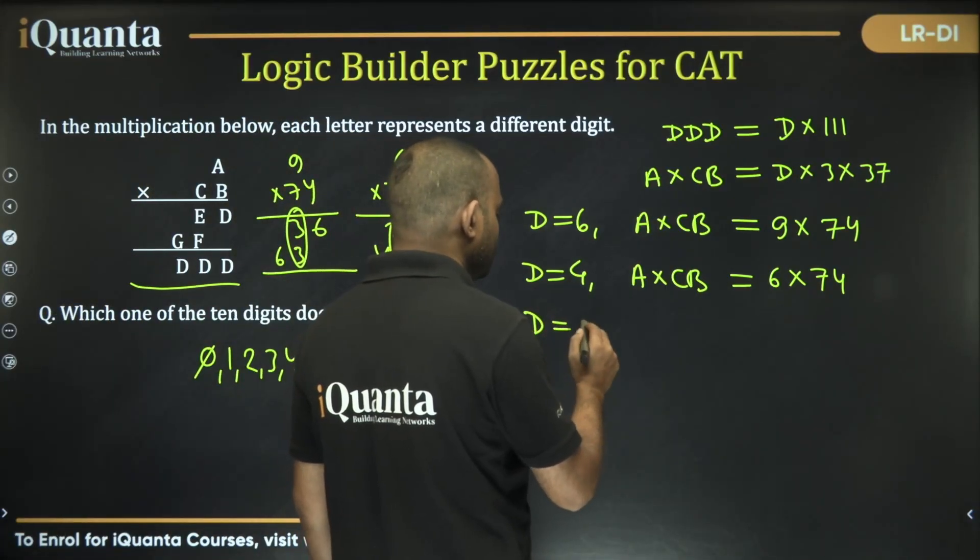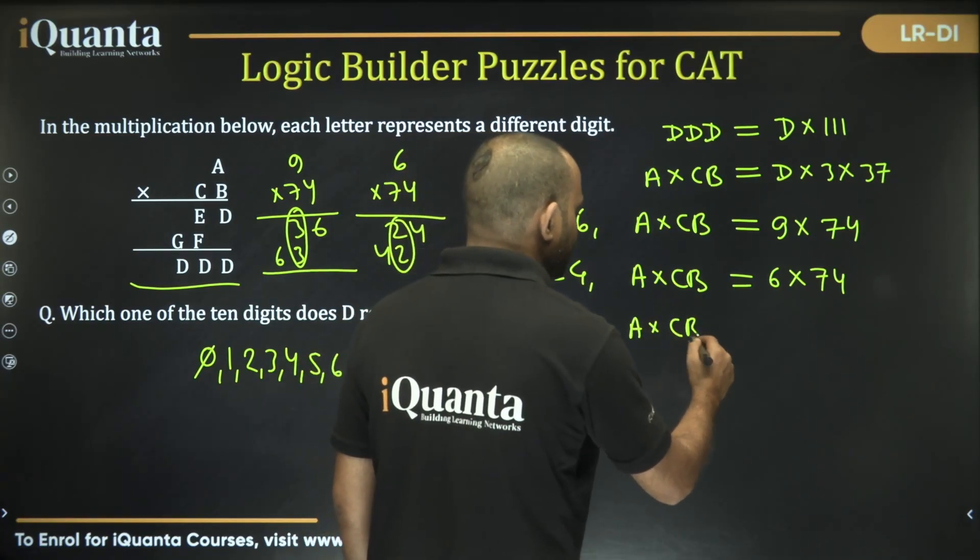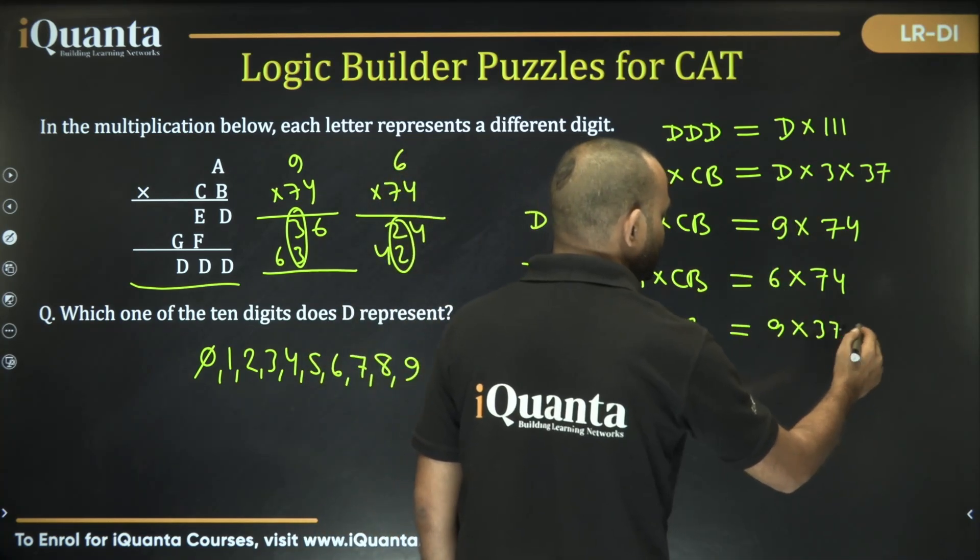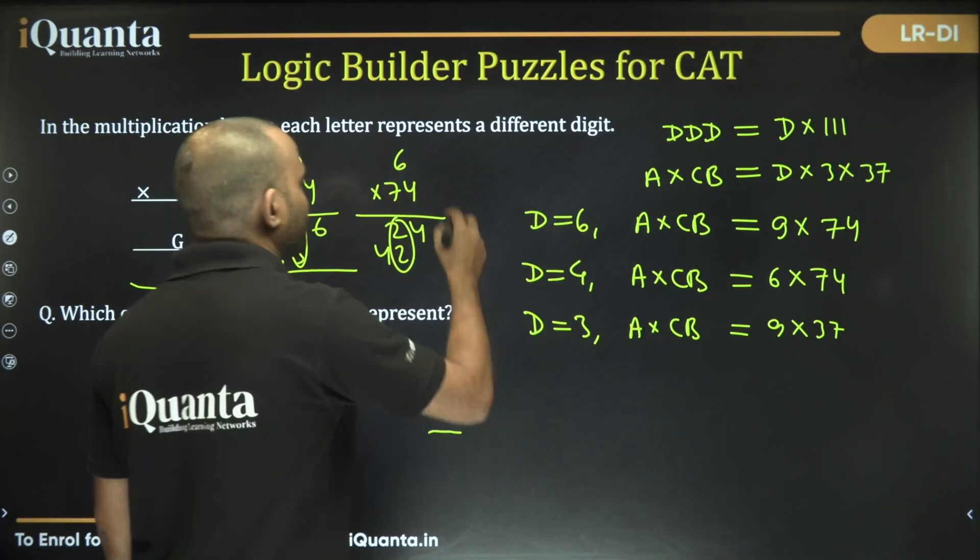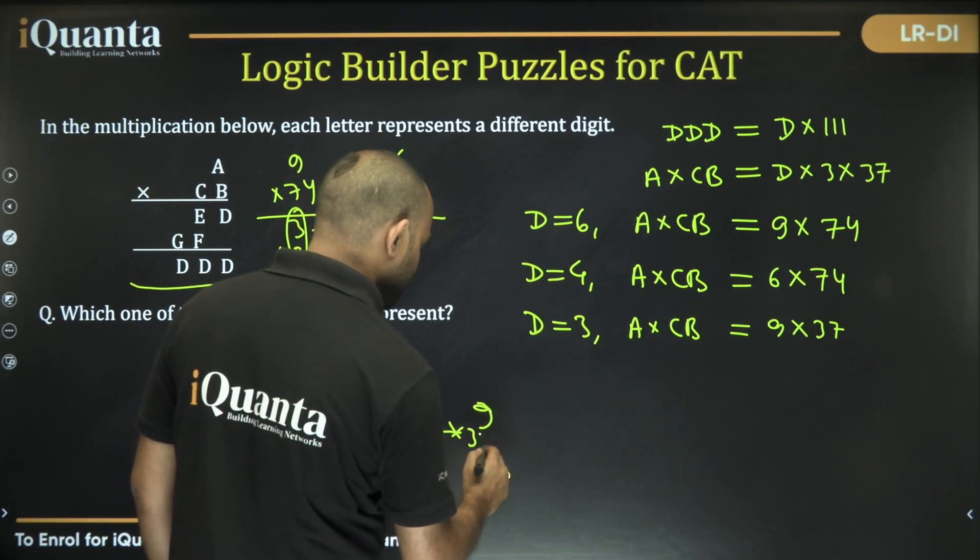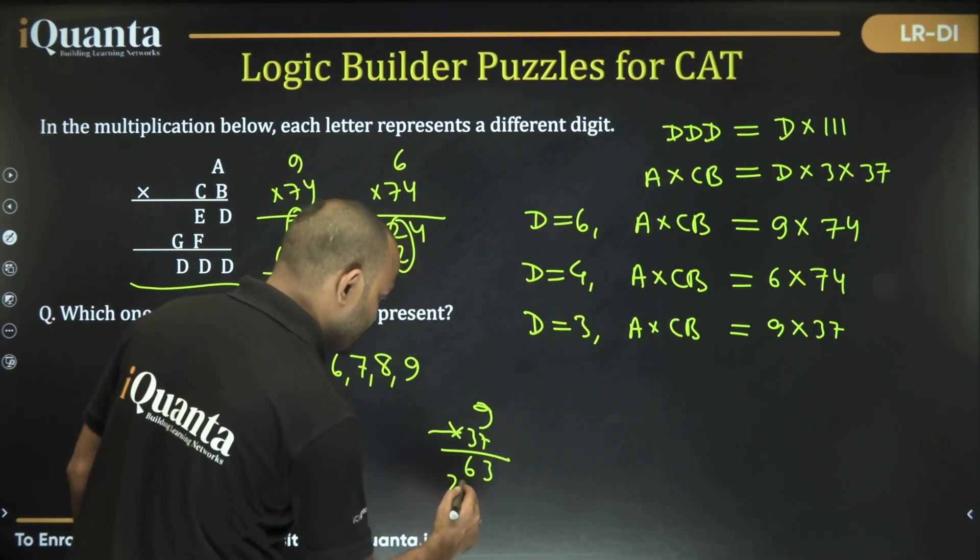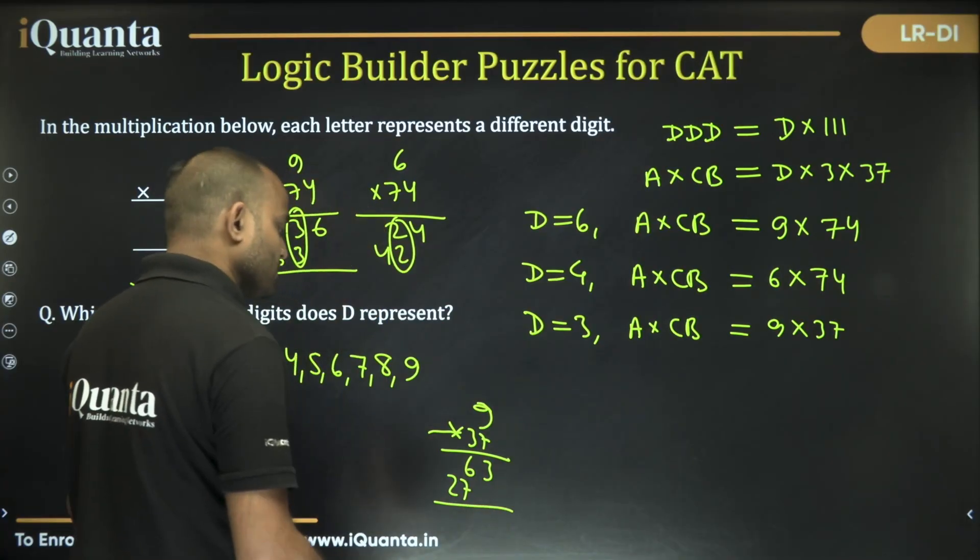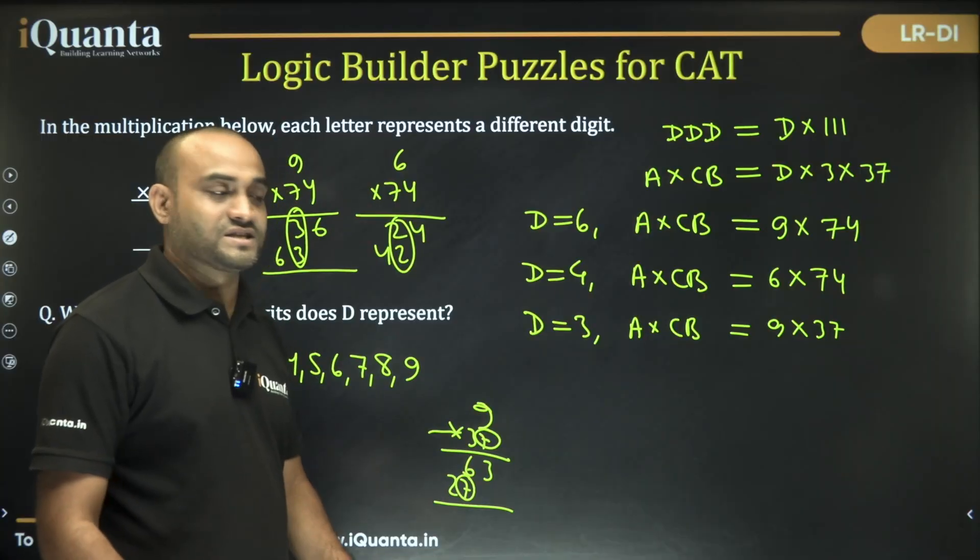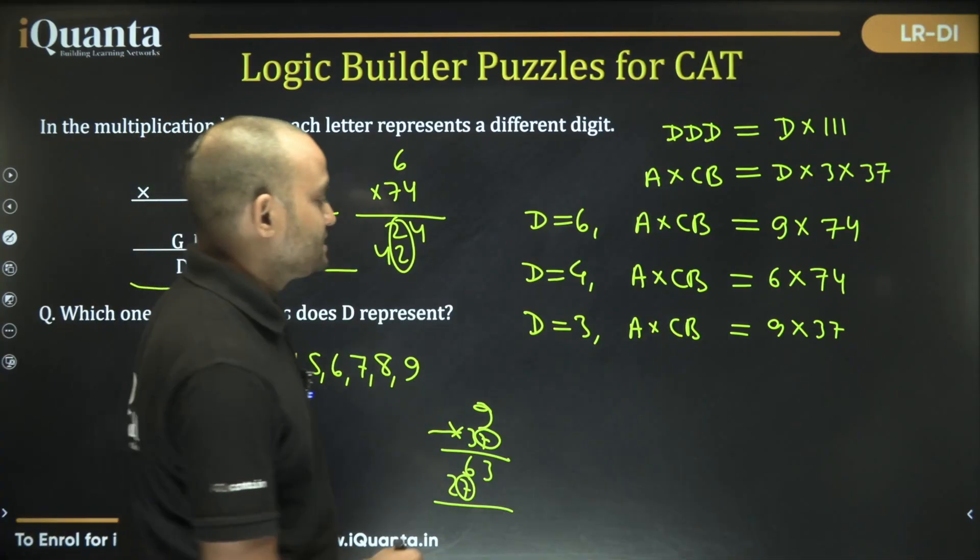Can I take D is equal to 3? If I am taking D is equal to 3, A into CB will become 9 into 37. The only possibility. And if we try this, 9 into 37: 9 into 7 is 63, 9 into 3 is 27. So what will happen? This digit and this digit both of these are same. So it's still not valid; B and F cannot be same.